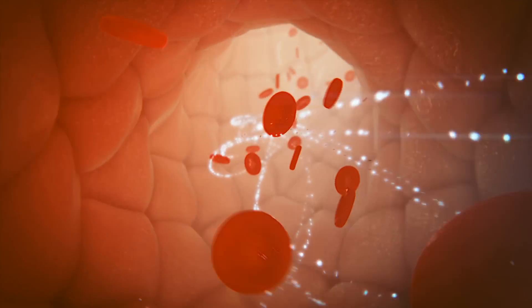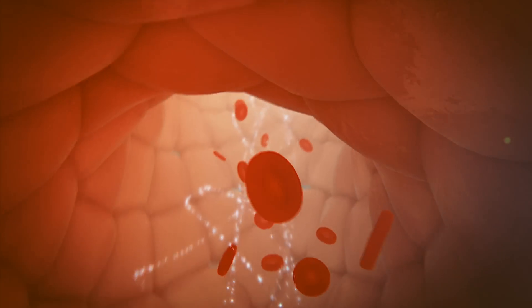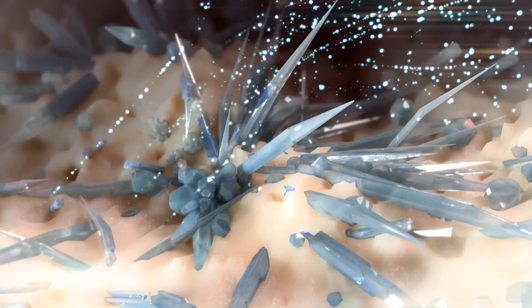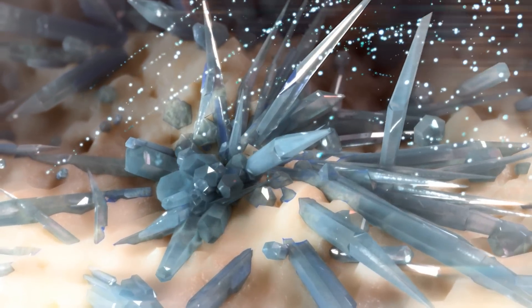When uric acid levels rise above the serum solubility limit, monosodium urate crystallizes out of the serum and deposits in joints and soft tissues. These crystals, or microtophi, may not be readily visible without special imaging.